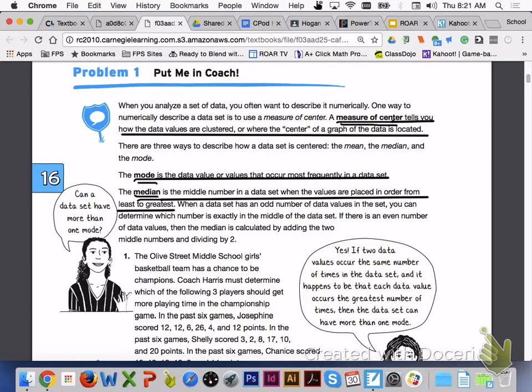Please turn to page 1070, problem 1, put me in coach. When you analyze a set of data, you often want to describe it numerically. One way to numerically describe a data set is to use a measure of center. A measure of center tells you how the data values are clustered, or where the center of a graph of the data is located. There are three ways to describe how a data set is centered: the mean, the median, and the mode.